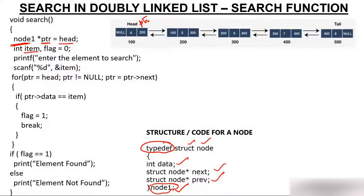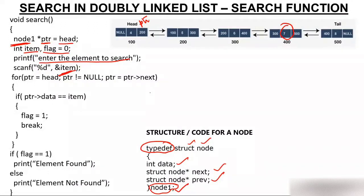I have created a variable item and a variable flag initialized to 0. Now I will ask the user to enter the element to search. Suppose the user wants to search 7, so item will have the value 7. This traversal coding is similar to the print coding — it starts from head and goes till the last node.